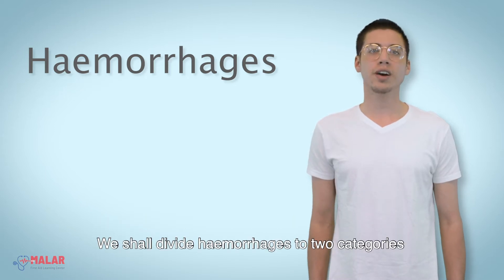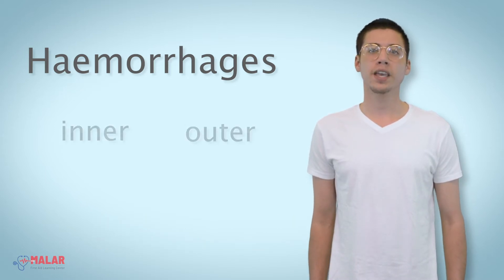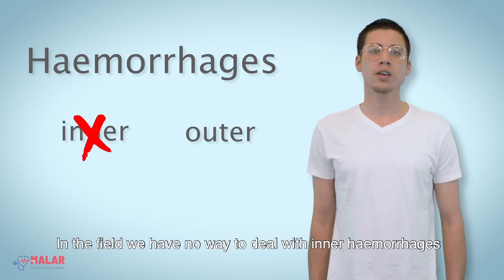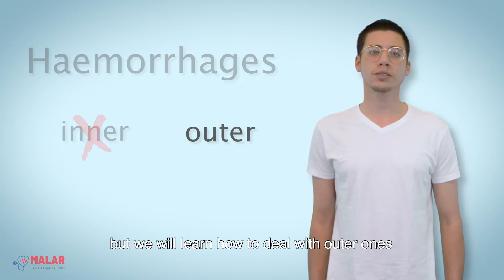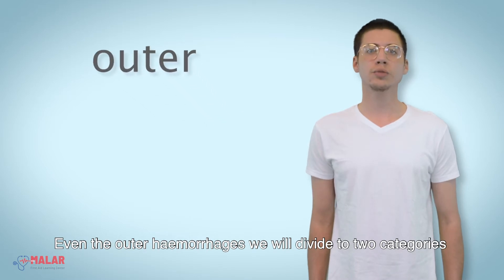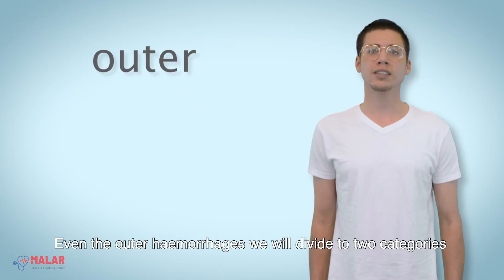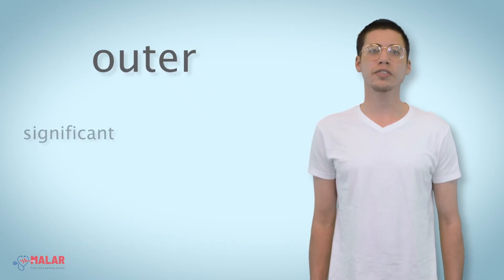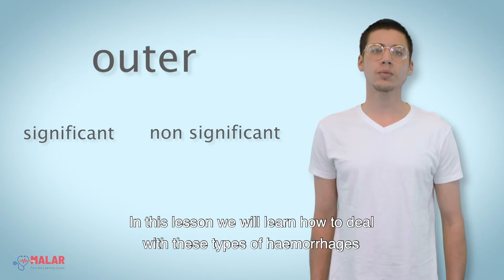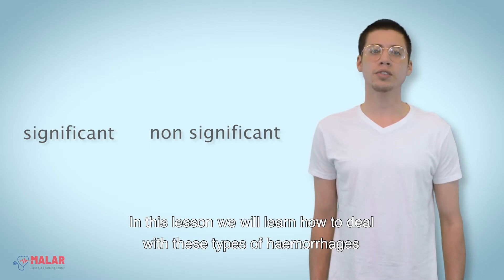We shall divide haemorrhages into two categories: inner and outer. In the field we have no way to deal with inner haemorrhages, but we will learn how to deal with the outer ones. Even the outer haemorrhages we will divide into two categories: significant ones and non-significant ones. In this lesson we will learn how to deal with these types of haemorrhages.